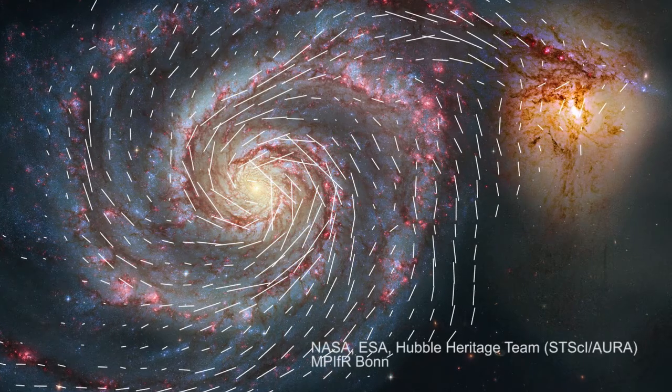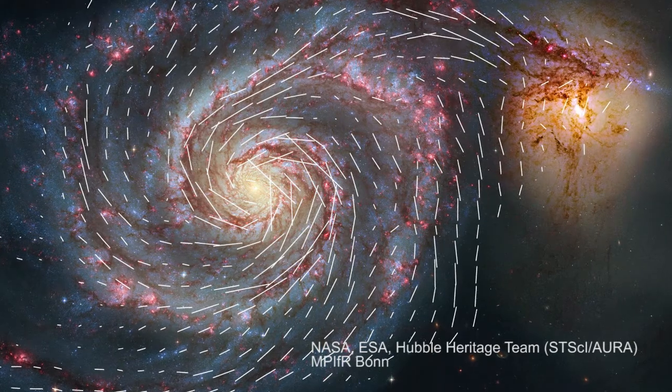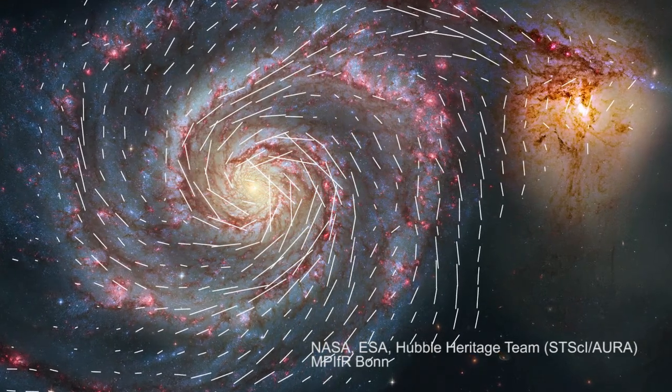Why do galaxies show these beautiful large-scale ordered magnetic fields? Galaxies are basically the places where stars form, so they are filled with billions and billions of stars.